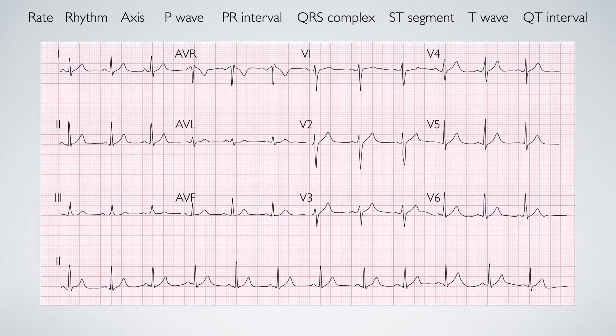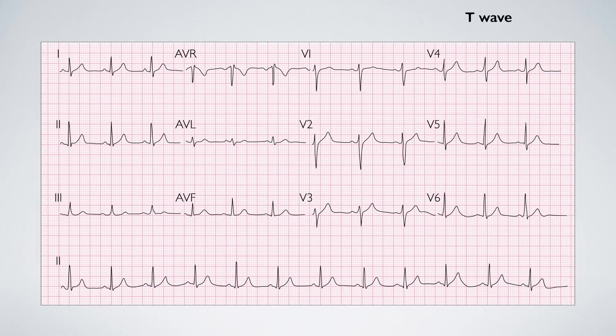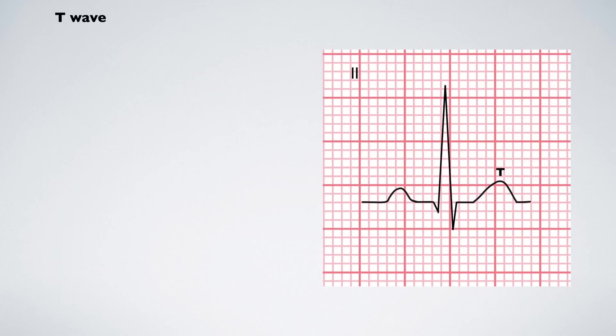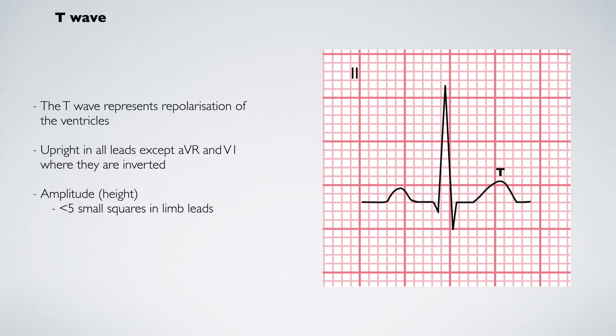Now we move on to T-waves. Just like with the ST segment, we scan all territories to evaluate the T-waves. T-waves represent ventricular repolarization and are positive in all leads apart from AVR and V1. In the limb leads, they should have a height of no more than five small squares. In the chest leads, the height should be no greater than 10 small squares.